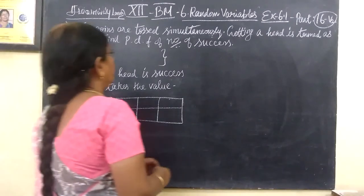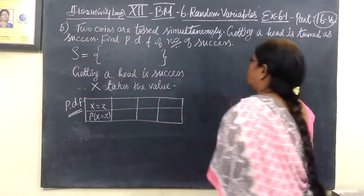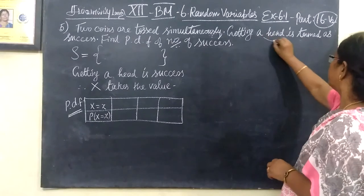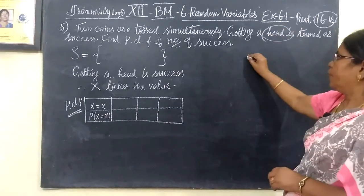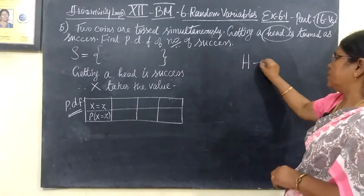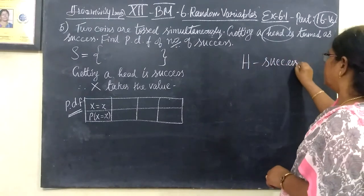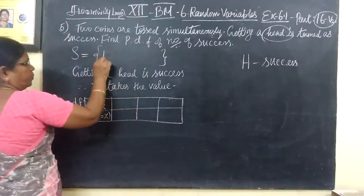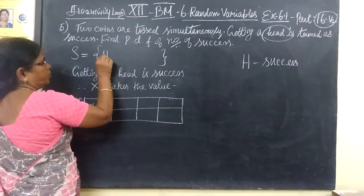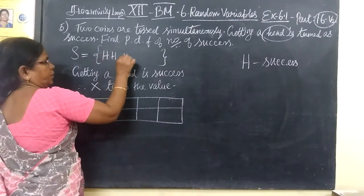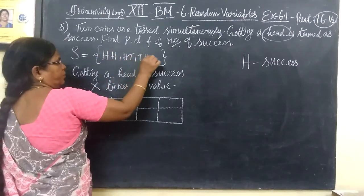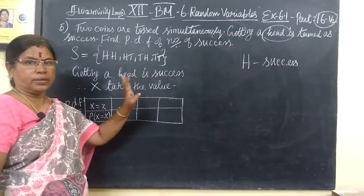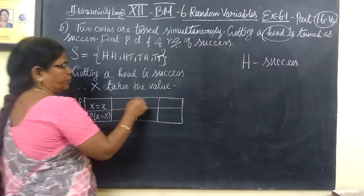Question 5: Two coins are tossed simultaneously. Getting a head is termed as success. Head is termed as success. What value is x?